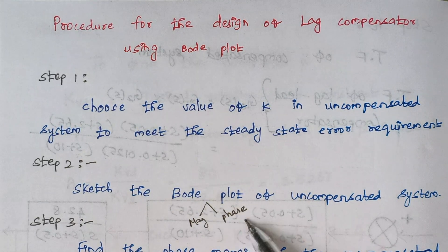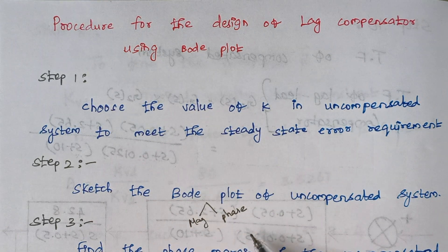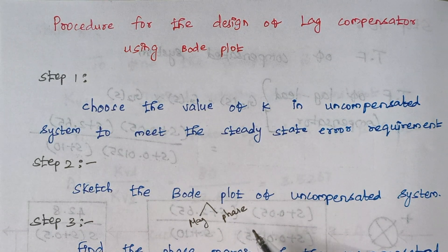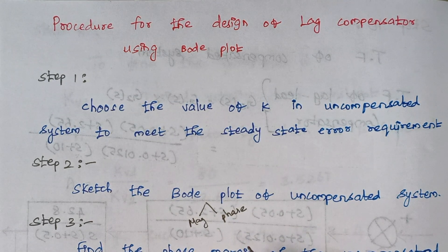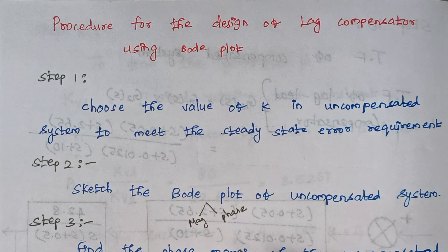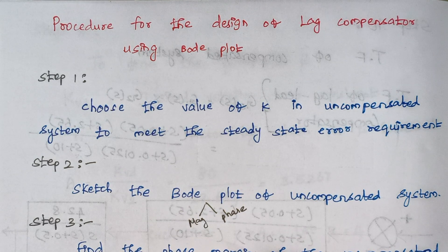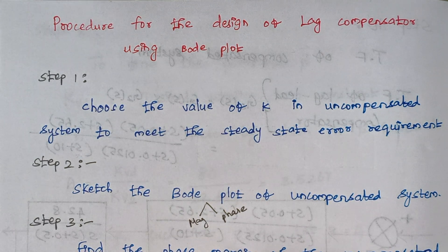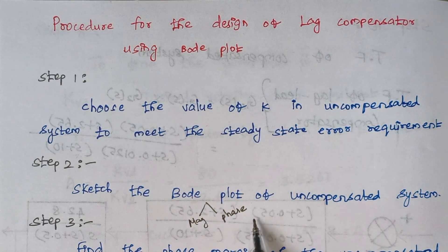For the phase angle calculation, we have to frame an expression first. The rule is tan inverse of the imaginary coefficient divided by the real term. Using that expression, we substitute different values of omega and calculate the respective phase angle values.